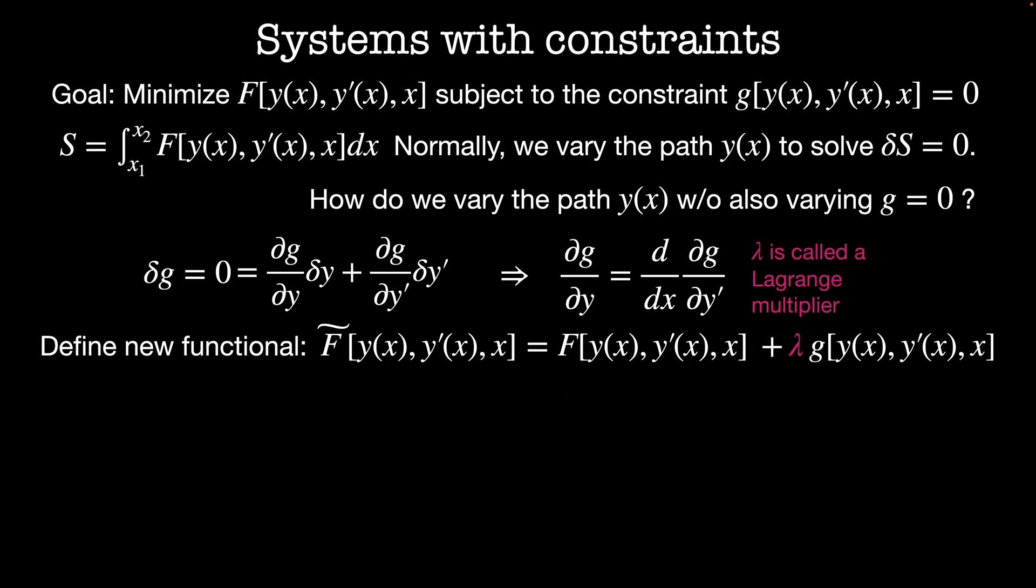Lambda is called a Lagrange multiplier. To solve this, you need to simultaneously solve the Euler Lagrange equation for f tilde and the constraint g is equal to zero for y of x and the Lagrange multiplier lambda, which might be a number and it might be a function.